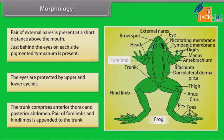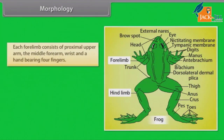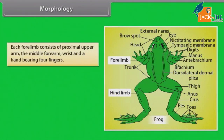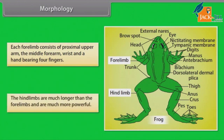A pair of forelimbs and hindlimbs is appended to the trunk. Each forelimb consists of a proximal upper arm, middle forearm, wrist, and a hand bearing four fingers. The hindlimbs are much longer than the forelimbs and are much more powerful.